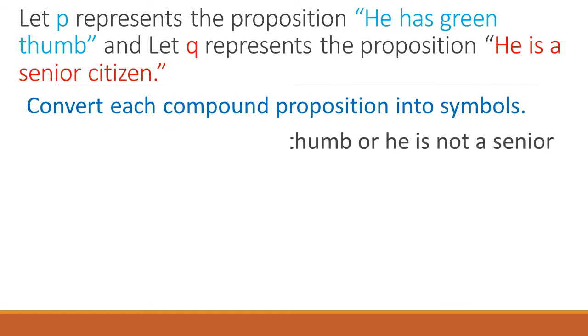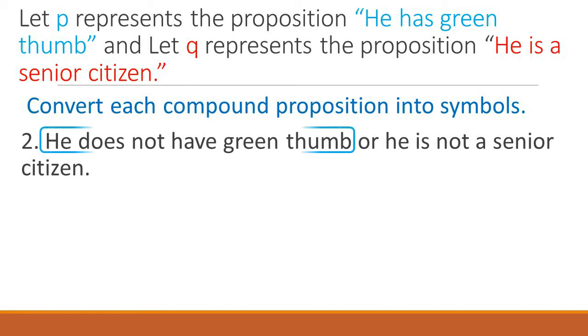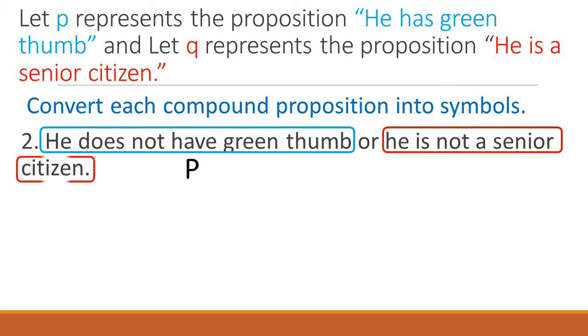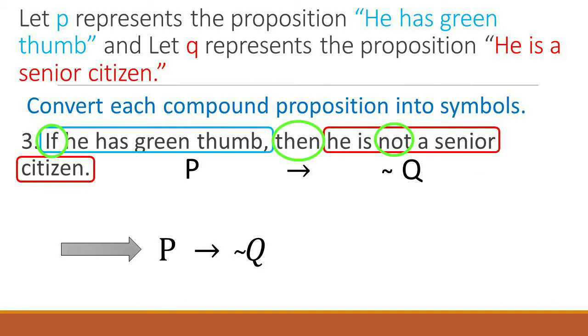He does not have green thumb or he is not a senior citizen. We convert he has green thumb with letter P and he is senior citizen with Q. Then we change the word 'or' with small letter V. Since we have the word 'not' in P and Q, therefore we both place a tilde before it. That is correct, our converted form is negate P small letter V negate Q.